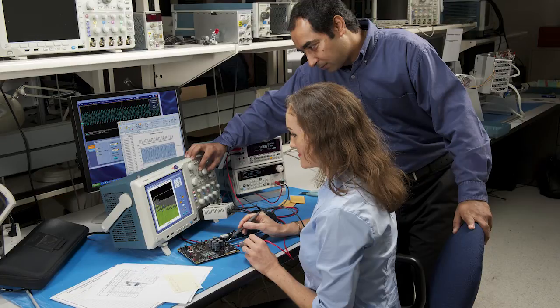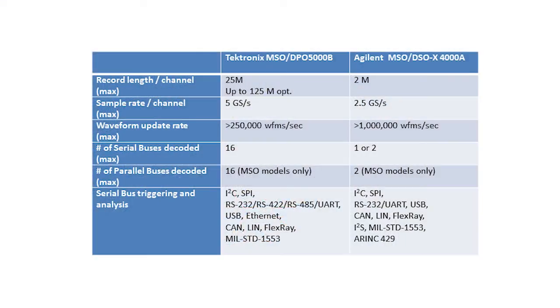When evaluating oscilloscopes, in addition to looking at bandwidth and rise time, there are two other factors that are important to note: record length and sample rate. The Tektronix 5000 series standard record length for all channels is 25 MPs standard and optionally up to 125 MPs. The Agilent X4000A series standard record length for all channels is 2 MPs maximum, but the usable memory varies with the time-based setting and other factors.